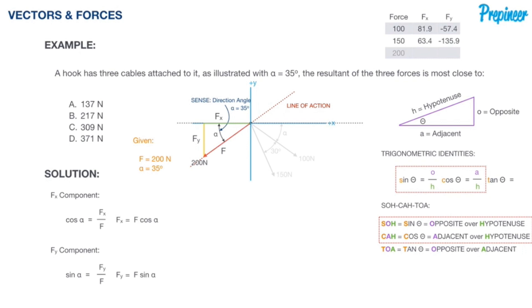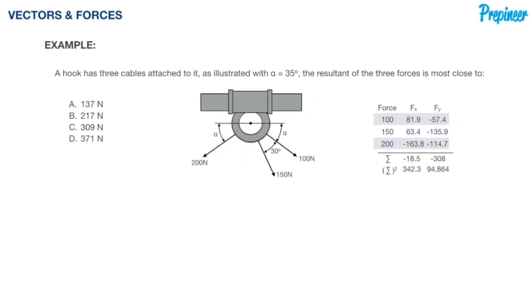Rearranging both of those to isolate each of our components, we have those two formulas stated on your screen. Taking our data, we have an x component of negative 163.8 Newtons, we have a y component of negative 114.7 Newtons. If you look up there in the upper right corner, we now have all of the data that we need for our hook.